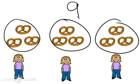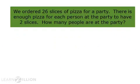Let's see how this works in a problem. We ordered 26 slices of pizza for a party. There is enough pizza for each person at the party to have two slices. How many people are at the party?